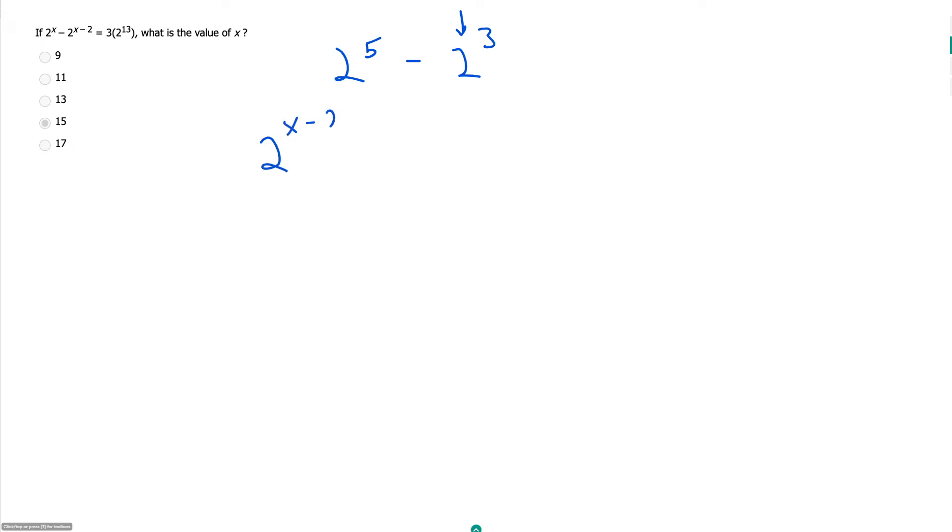That's why I say you need to know them backwards and forwards. If I factor out 2 raised to the x minus 2, then to get back to 2 raised to the x, I have to multiply that by 2 squared, and then that would all just be minus 1.